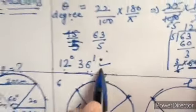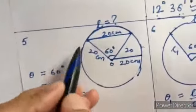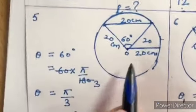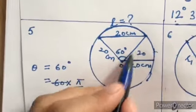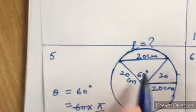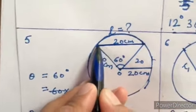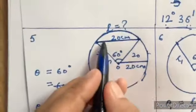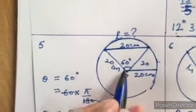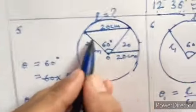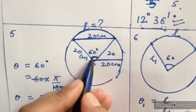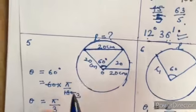Question number five: you have a circle with diameter 40, so radius is 20. The length of the chord is also 20. This forms a triangle with base 20 and both sides 20 — an equilateral triangle. So the angle is 60 degrees.